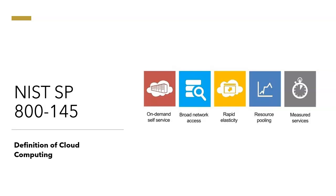The next characteristic is rapid elasticity. This characteristic allows the consumer to expand or contract the resources they use from the pool — we call this provisioning and deprovisioning. Often this is a completely automatic process. This allows them to more closely match resource consumption with demand, for example adding virtual servers, compute, or memory as demand increases and shutting them down when demand drops.